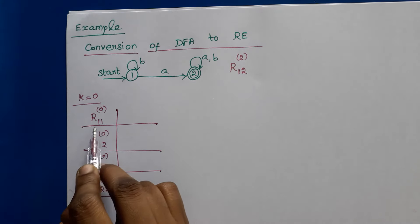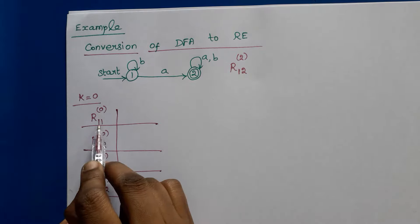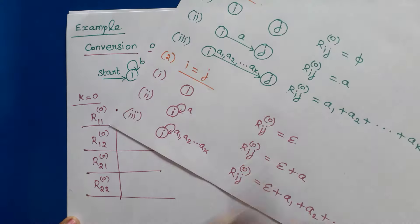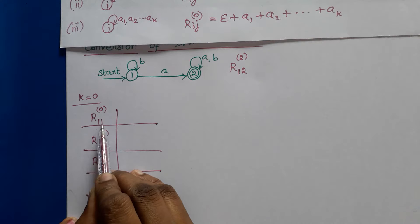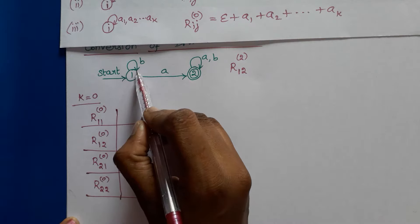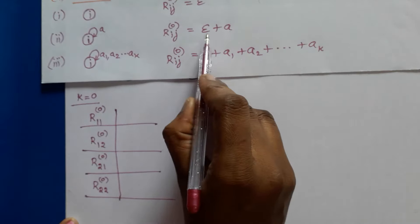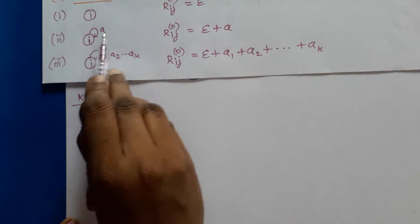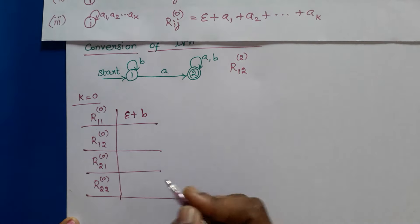For r11, i is 1 and j is also 1, so i equals j. We refer to the second rule — the i equals j case — and check if there is any transition from state 1 to state 1. Yes, there is a single transition, so the regular expression is epsilon plus that symbol, which is b. So r11 to the power 0 is epsilon plus b.